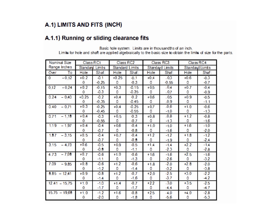These are the tables for a basic hole system where the basic size is assigned to the hole. For running and sliding clearance fits — the RC fits — different sizes are designated for various basic sizes. For example, if your basic size is between 0 and 0.12, the RC1 class gives the upper and lower limits for the hole and shaft sizes. Similarly, RC2, RC3, and RC4 values are tabulated for different fit types.